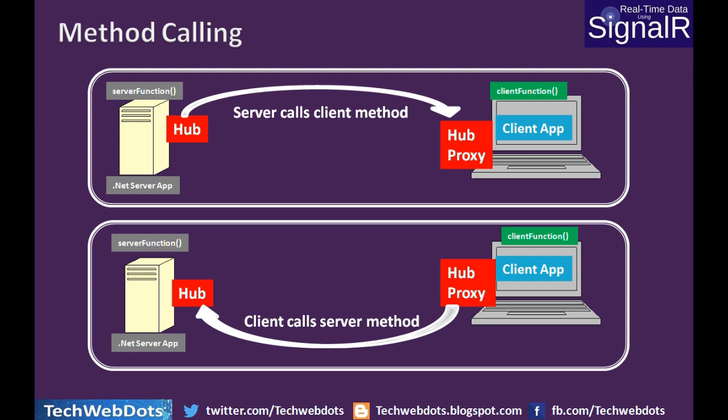Here is a clear picture of how method calling happens between server and client. On the server we have a server function, on the client we have a client function. The server calls the client function through a hub proxy, and in the same way the client can also call the server method. This is how both communicate with each other. A persistent connection is created with the help of WebSockets, and WebSockets work with the help of hubs written in C-Sharp.